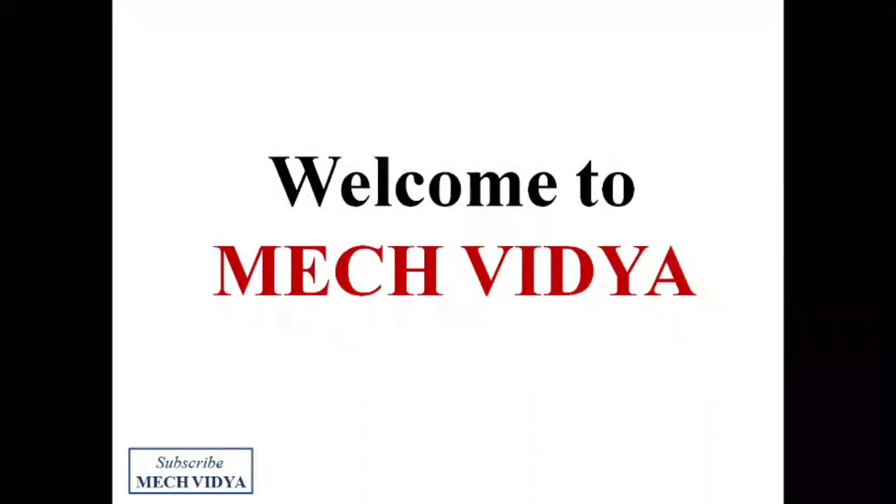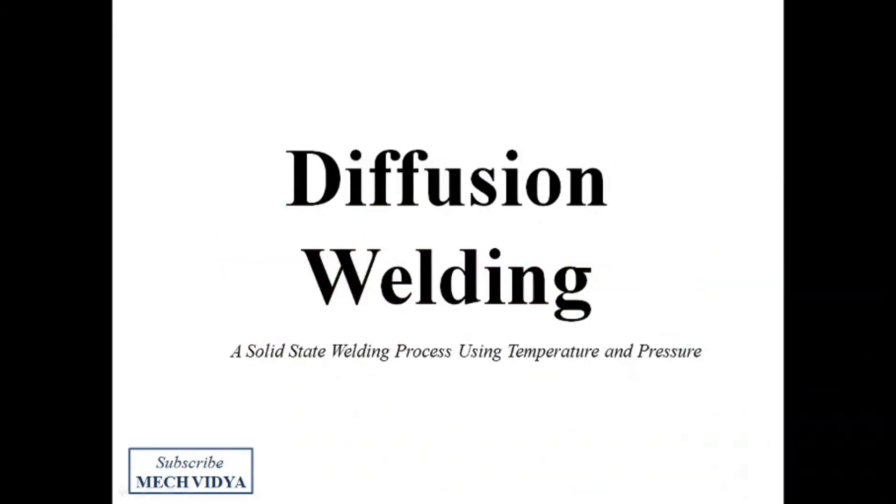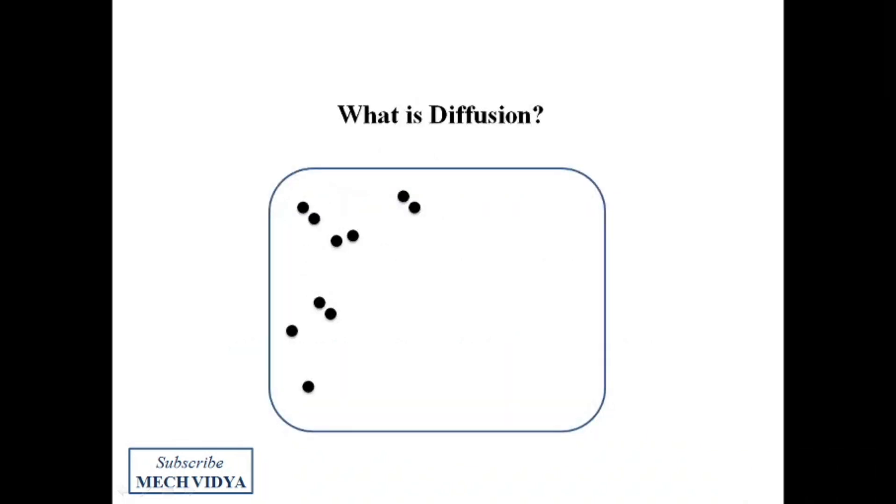Hey guys, welcome to Mech Vidya. In this video, I will introduce a very interesting type of modern welding technique known as diffusion welding. So what is diffusion? Diffusion is the process by which molecules flow from one region to the other, and diffusion bonding is the technique where atoms of two metals diffuse across the joint interface due to high pressure and temperature.